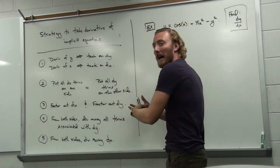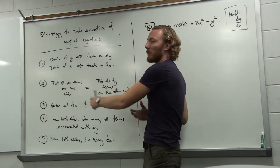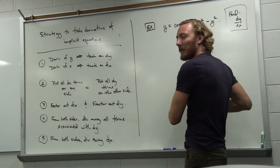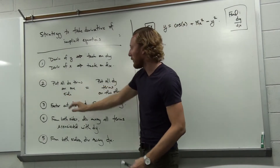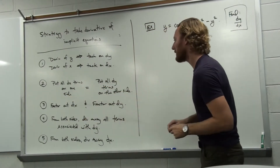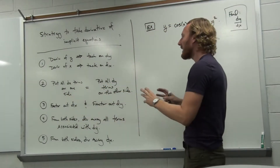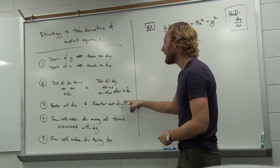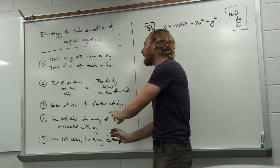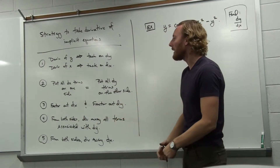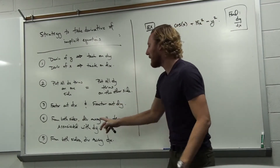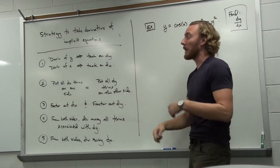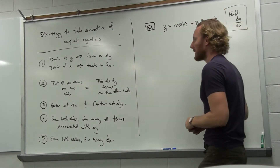Then, to tidy and arrange, we put all the dx terms on one side and all the dy terms on the other. We then factored out the dx and dy, because every term on one side had a dx and every term on the other side had a dy. And then, in order to get dy over dx by itself, we first got the dy by itself by dividing away everything associated with dy, and then to get the dx in the denominator, we divided away the dx. This step-by-step process applies to any such implicit equation.